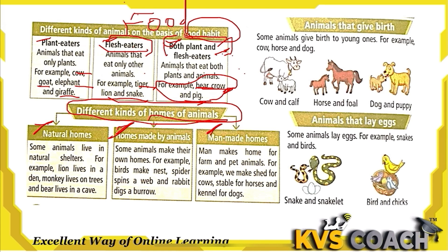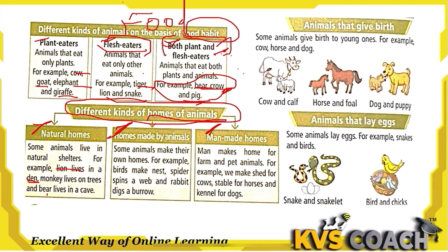Some animals live in natural shelters. For example, lion lives in a den, which is naturally made by rocks. Monkey lives on trees, and bear lives in a cave. These are all natural shelters.